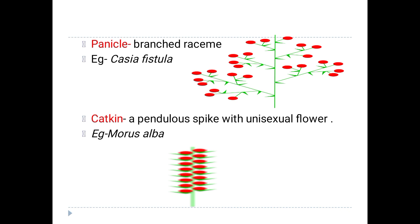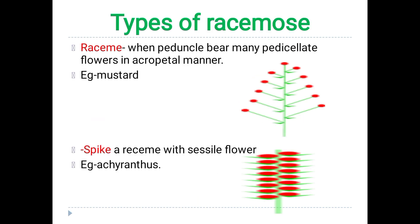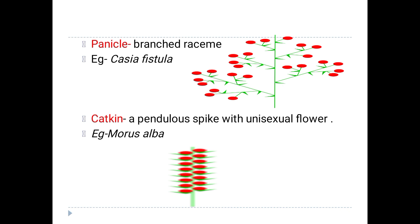Now we have panicle. Panicle is similar — the terminal does not contain any flowers, and there are flowers on the branches. But the difference here is that the branches are further branched. This further branching is called panicle, and an example is Cassia.